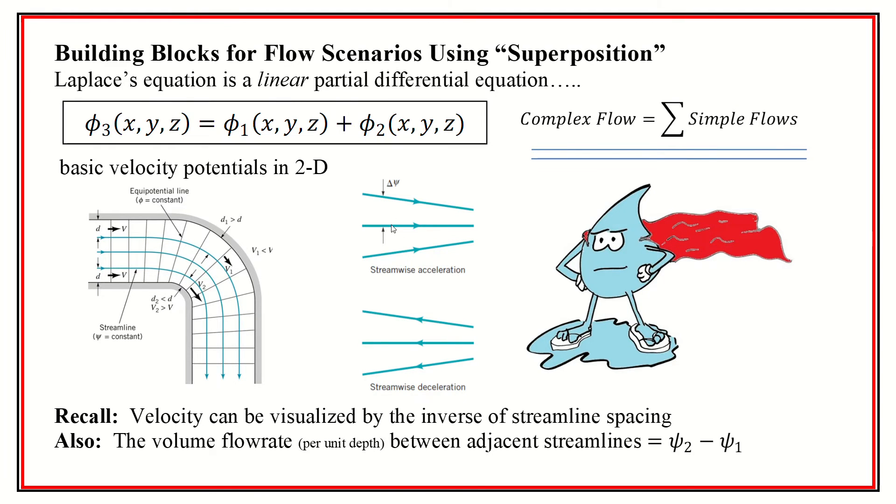Notably, for the streamlines, as they get closer and closer together, that means they accelerate. And as they get further apart, the flow is decelerating. So you can kind of think about that also graphically as being one of the things that you can try to figure out. You can find the acceleration based on how these streamlines are working together. When you build them together using these building blocks and the superposition.